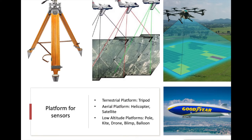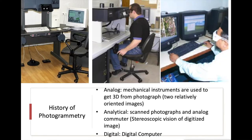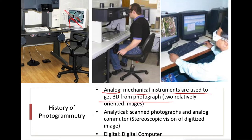Now let us look at the types of photogrammetry. We can classify into three types. Analog photogrammetry is when mechanical instruments are used to get 3D information from photographs. These are not digital instruments but physical mechanical devices used to extract 3D images.